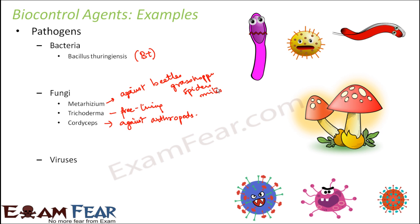The last category of pathogens is viruses. One important example is the rapid hemorrhagic disease virus, which protects plants against rapid hemorrhagic disease. Baculoviruses are another class that infect invertebrates — they can attack insects and arthropods but have no negative impact on plants. They therefore act as biopesticides in crop fields. Baculoviruses are so named because they have large rod-shaped circular DNA.